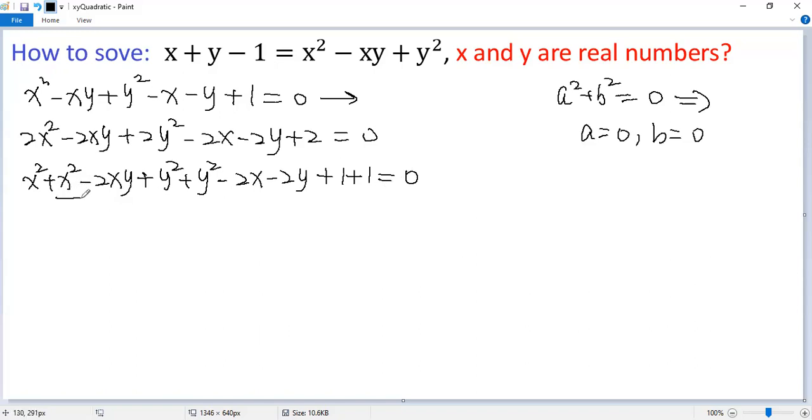So we know that's a perfect square. Write it down. So x squared minus two xy plus y squared plus y squared. And then you see x squared minus two x plus one, also a perfect square.